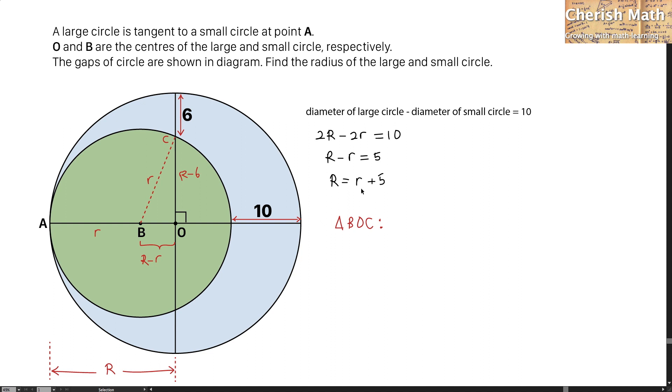By substituting the value of the capital R into this part and this part, the value that I'm going to get here is r minus 1. And for this value, I am going to get 5.